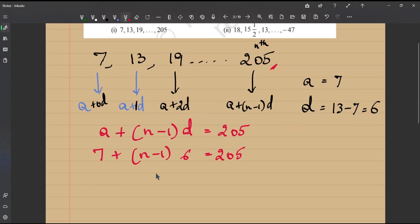So now it is easy for us to simplify and write. Let us just keep n minus 1 into 6 on one side and subtract 7 from both sides. What do we get? 205 minus 7 is 198, isn't it?